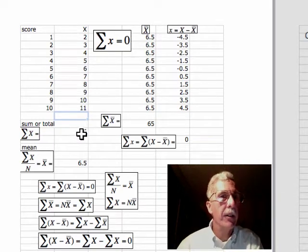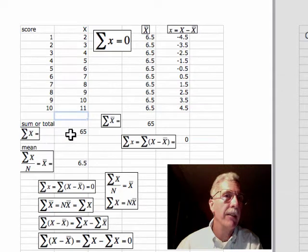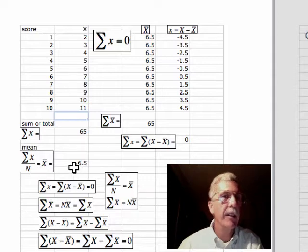If we add those scores up, we have a total sum of x of 65. If we divide 65 by 10, we get the mean, which is 6.5.